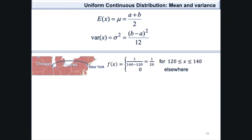In the example considering the flight time from Chicago to New York, the probability density function was found to be 1 over 20 for x values between 120 and 140 minutes, and 0 elsewhere. The mean is obtained by taking 120 plus 140 and dividing by 2, which gives us 130 minutes. Therefore, on average, the flight time from Chicago to New York is 130 minutes.